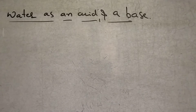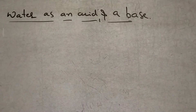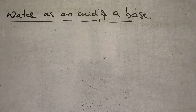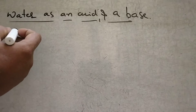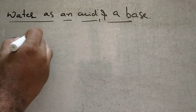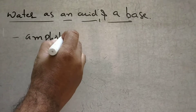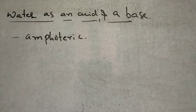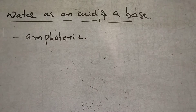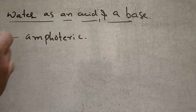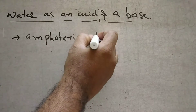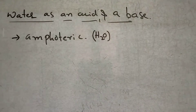Hi, this is Dr. J.M.R. Chemistry. Today I am going to explain water as an acid as well as a base. Here we will introduce a terminology: amphoteric. Amphoteric substance means it acts as an acid as well as a base. Generally, water is amphoteric in nature — it acts as both an acid and a base.